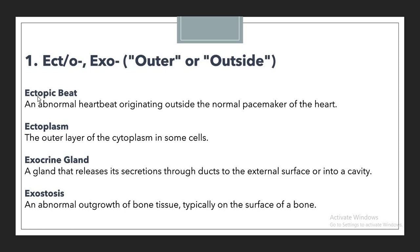Remember, in this series we are only discussing prefixes, not the entire terminology. Although from the examples it is clear why we use 'ectopic beat,' we are just focusing on the prefixes. Those are the two examples for ECTO. Now we will focus on EXO, for which we have two terms: exocrine gland and exostosis.